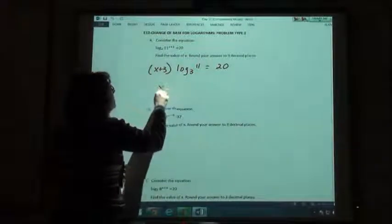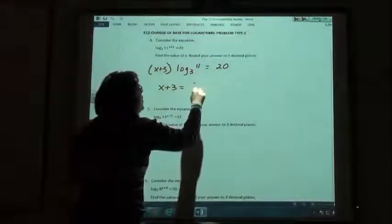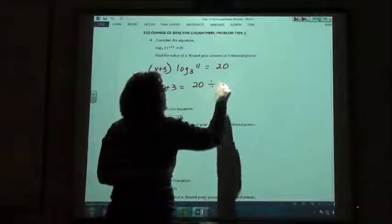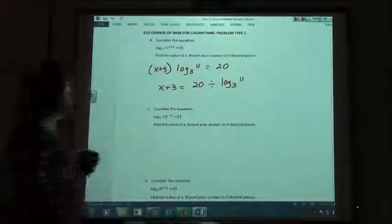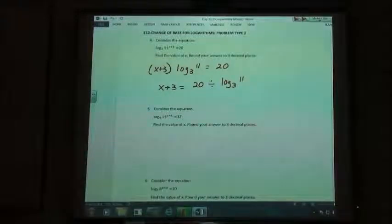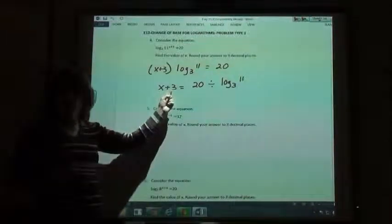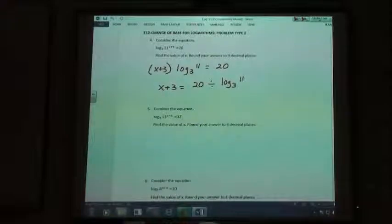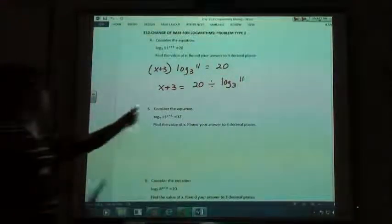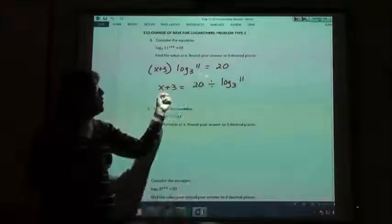So I'm going to say that x+3 is equal to 20 divided by the log base 3 of 11. Now, I still have to get the x by itself. How do I move the 3 to the other side? Are you trying to move it over on that side? Yeah, because it's with the x and I've got to move it over.